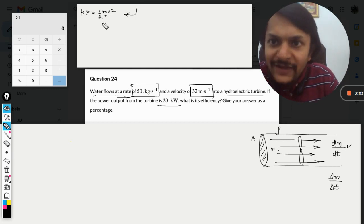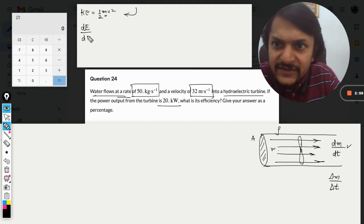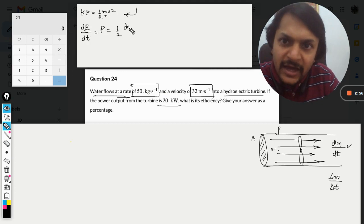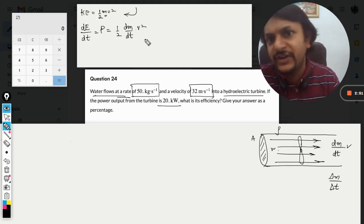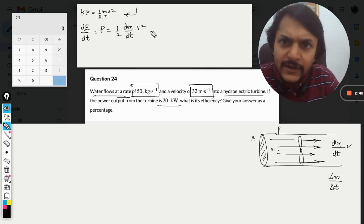I can write it as dE divided by dt. Power will be given by half dm/dt - I've just divided m by t. Velocity is not a variable, so I'm keeping it as v. Our formula becomes v squared by 2 into dm by dt.